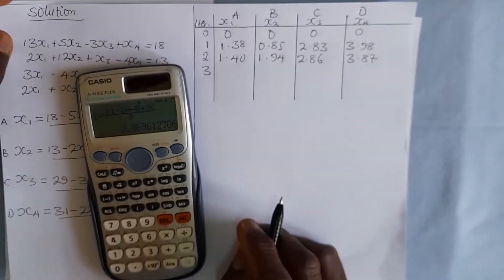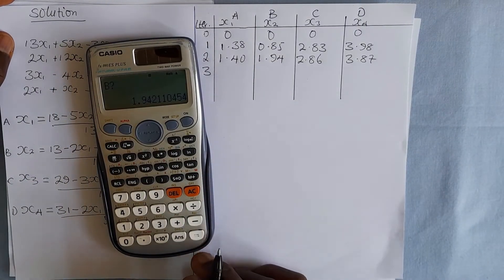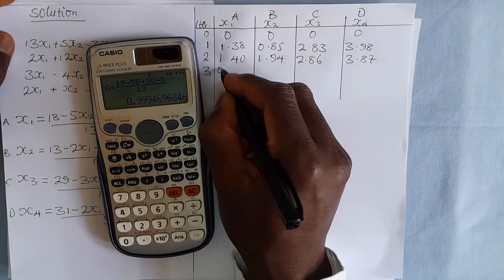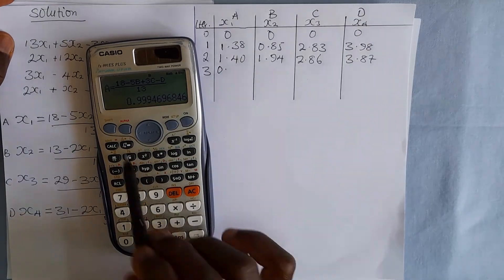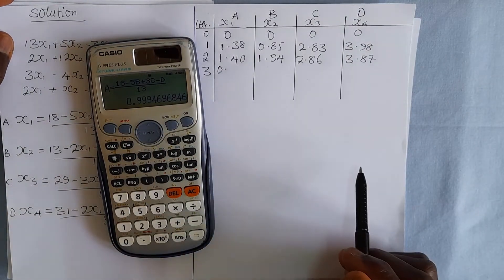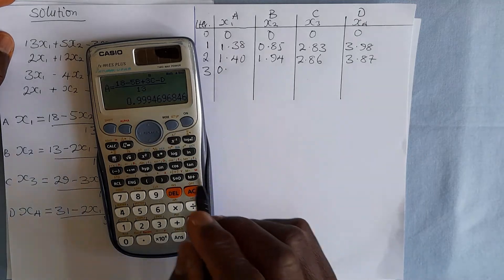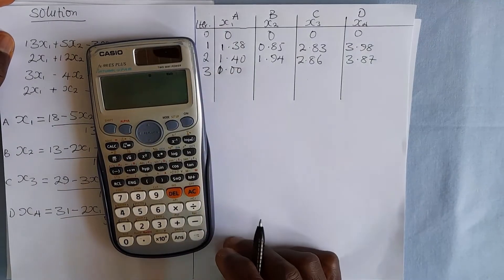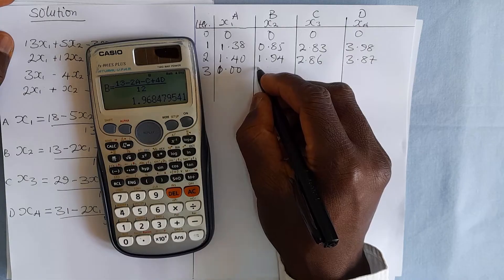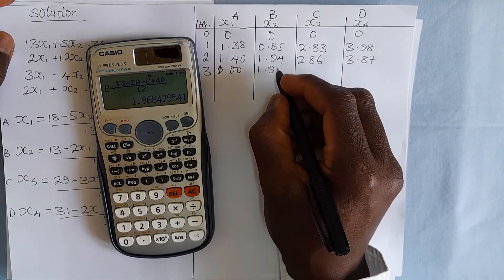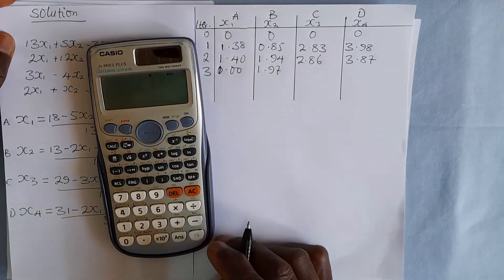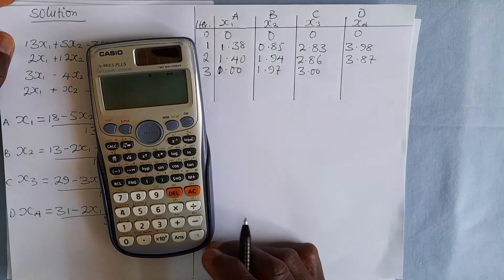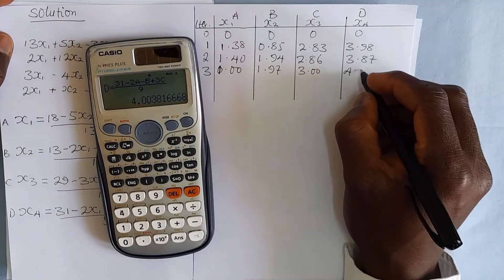For iteration 3, pressing the equality sign again for A, B, C, and D gives: A ≈ 1.00 (the value is 0.99..., rounded to 2 decimal places gives 1.00), B = 1.97, C = 3.00, and D = 4.00.